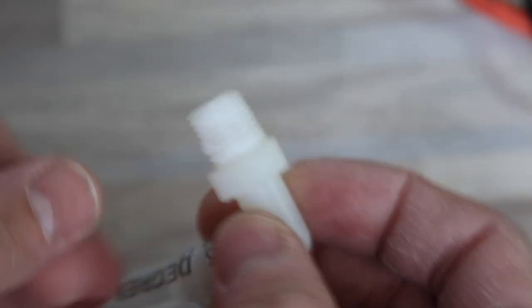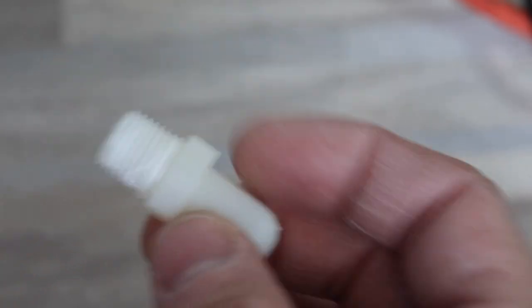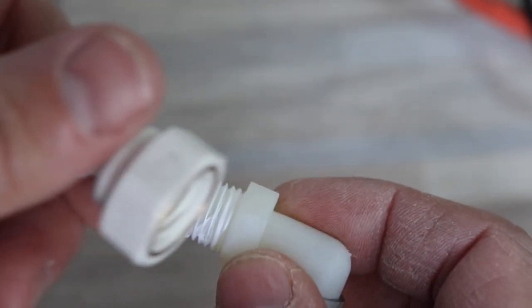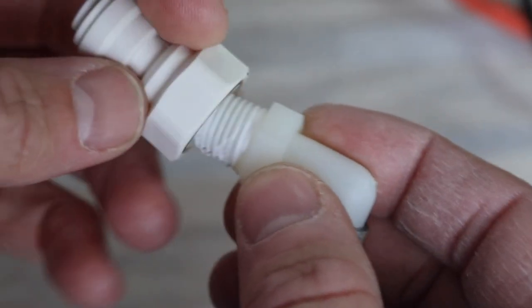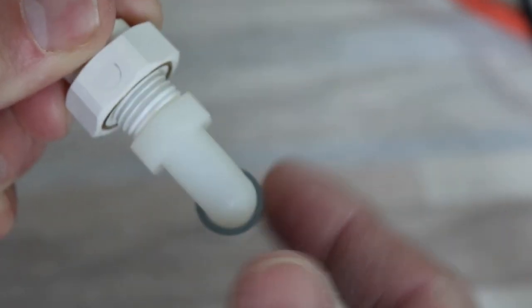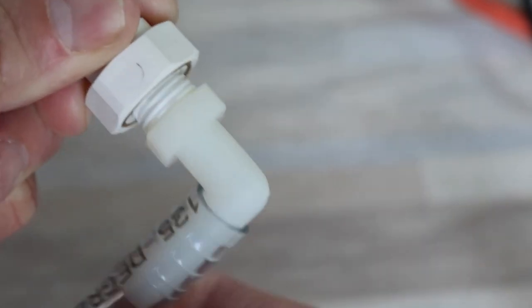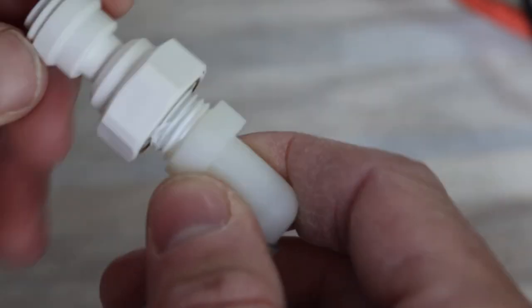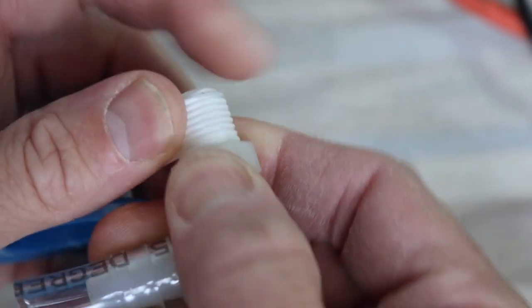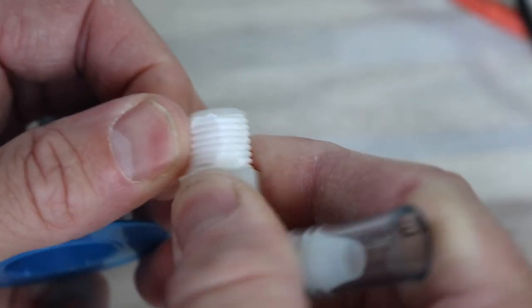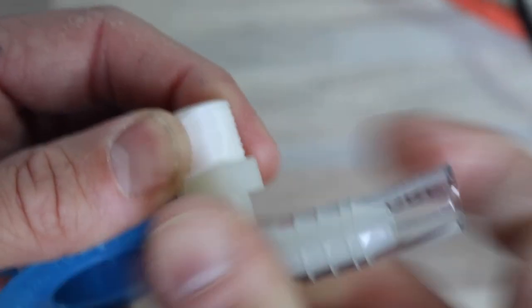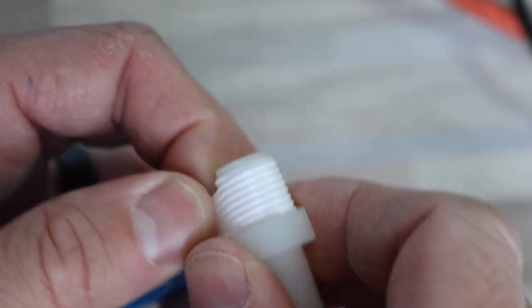I like to use Teflon tape because it's easy and not very messy. The important thing when using Teflon tape is to pay attention to how the fitting screws into its mating half. See how this one goes in clockwise. See how I'm wrapping it in a clockwise direction. That's going to correspond with the direction of the fitting, so the tape gets tighter as you tighten it into the fitting and doesn't get unwound when it goes in.